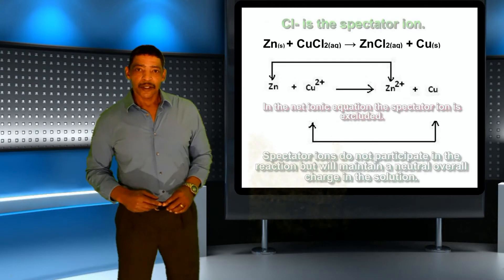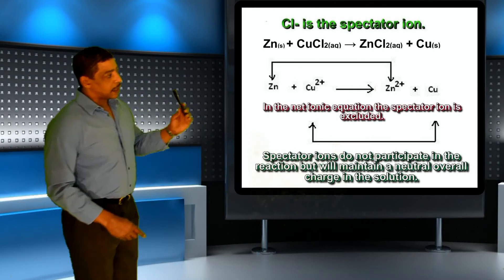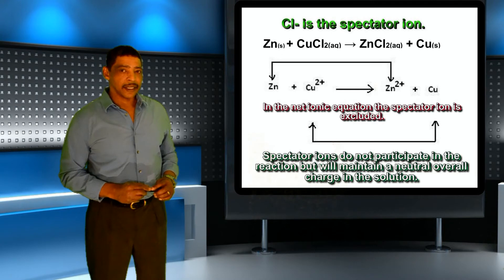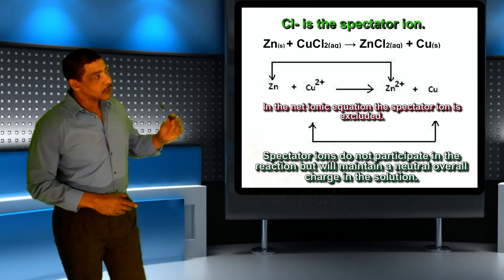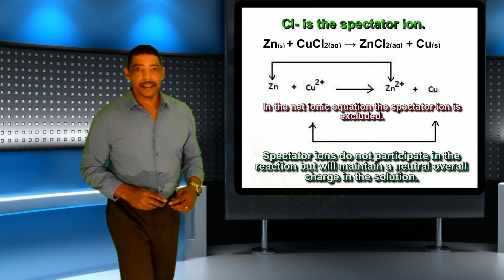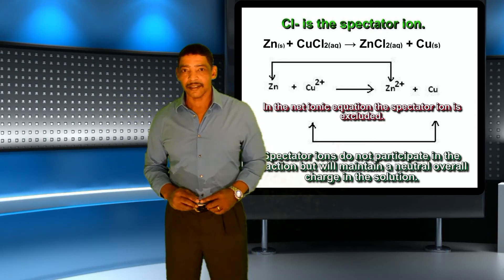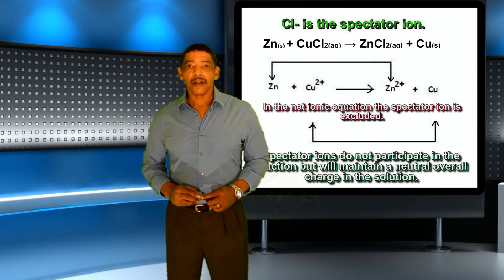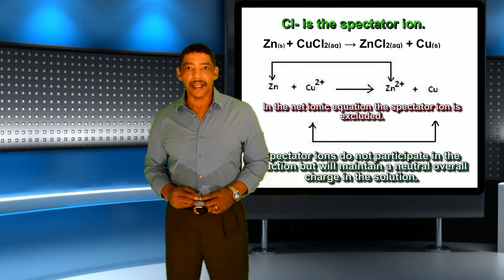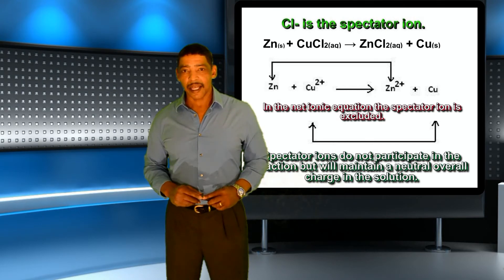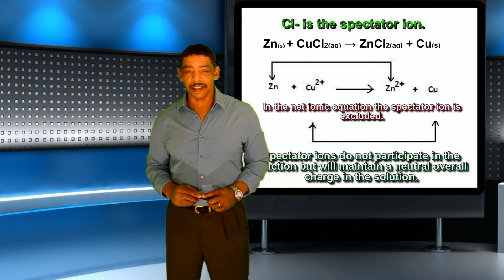Notice that in the net ionic equation, the chloride anion is excluded. Because the chloride anion remains at minus one throughout the process, chloride is considered to be a spectator ion, where spectator ions do not participate in the oxidation-reduction reaction.